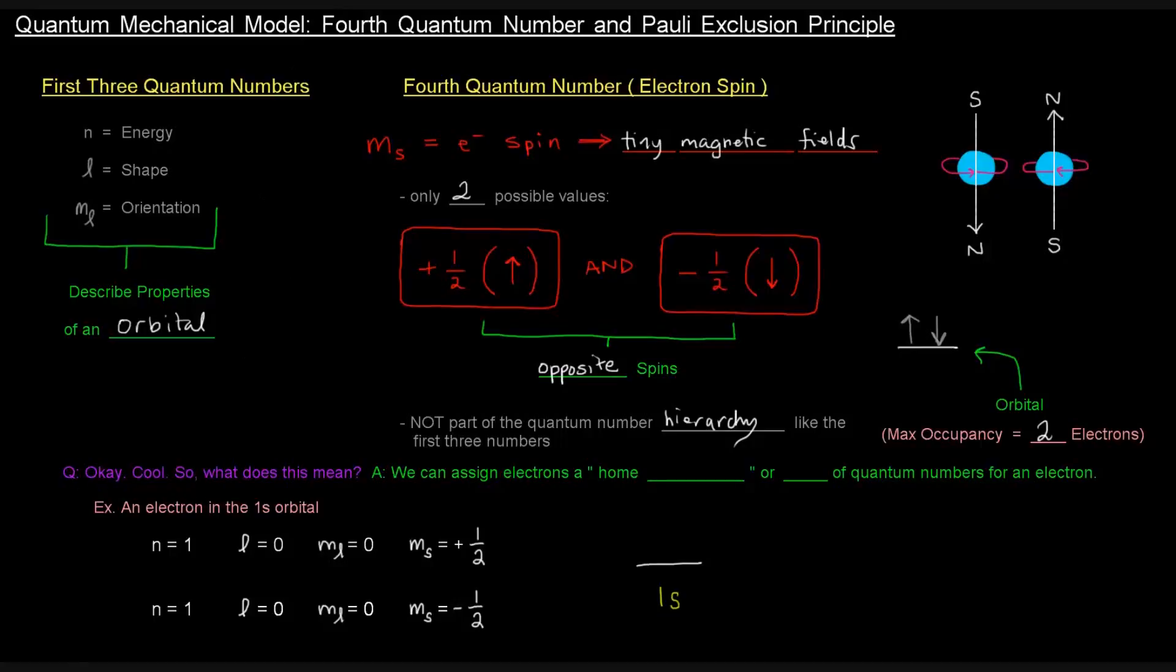What does this mean? Well, now that we've talked about all four of the quantum numbers, we can assign what's sort of often called a home address, or a set of quantum numbers for an electron.